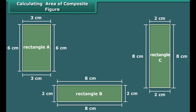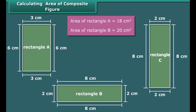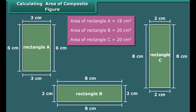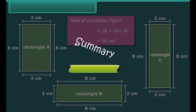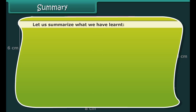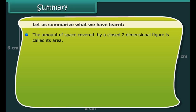Now let us calculate the area of a shape that is made up of multiple rectangles. First, break the composite figure into individual rectangles. Calculate the area of each rectangle. Then sum up the areas of all the rectangles to find the area of the composite figure. Here we can divide the given composite figure into 3 rectangles.